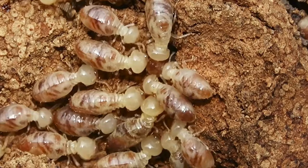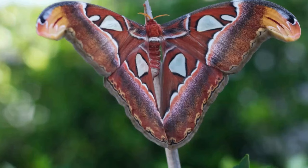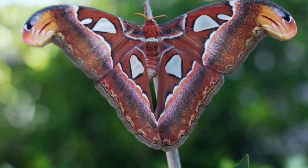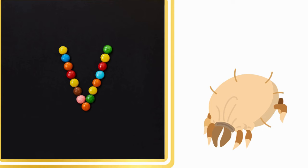U. U for Underwing Moth. V. V for Velvet Moth.